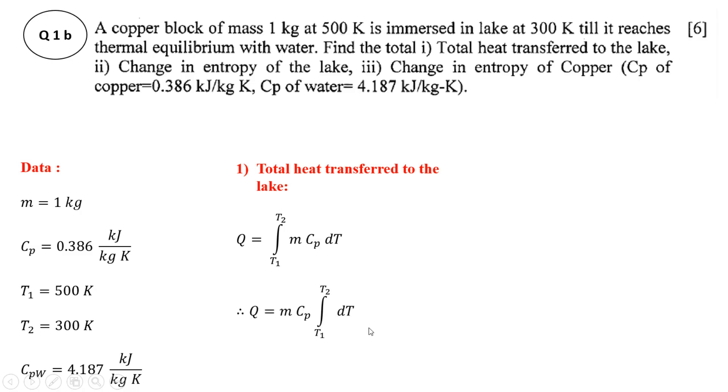m·Cp is constant so it is only integration of dT. Integration of dT is T and the limits are from T1 to T2. So substitute the upper limit in place of T, that is T2 minus the lower limit T1. So mass is 1, Cp is 0.386, and it is 300 minus 500.